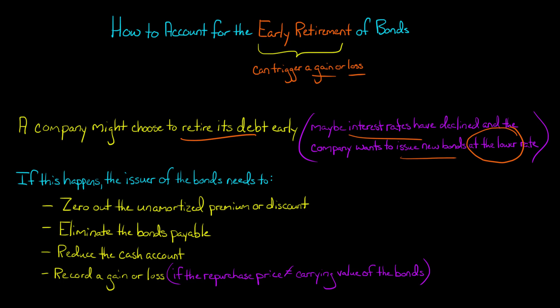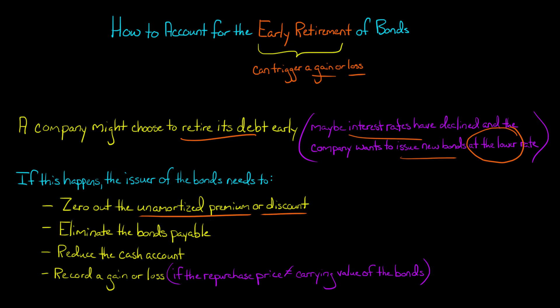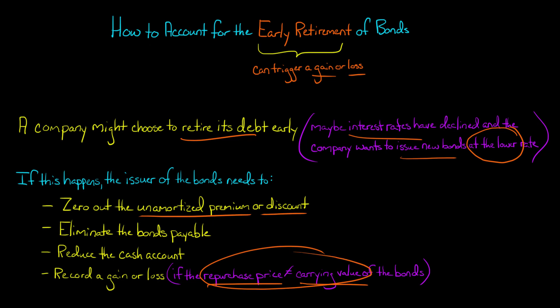If the borrower decides to repurchase those bonds and retire them, the issuer — the company that originally issued the bonds and borrowed the money — will need to zero out any unamortized premium or discount, eliminate the bonds payable since the bonds are no longer payable, and reduce the cash account assuming they paid cash to retire the bonds. They may also have to record a gain or loss, which occurs when the repurchase price differs from the carrying value, or book value, of the bonds at the time of retirement.